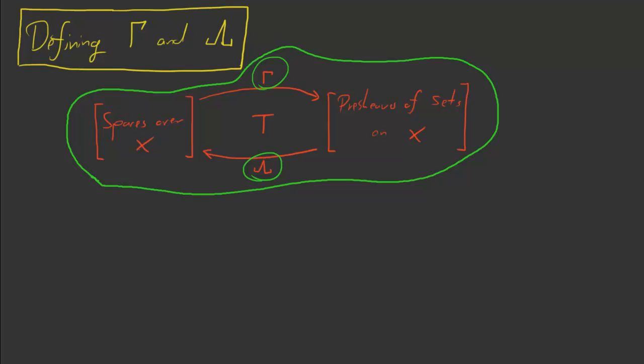So let's start with gamma because it's easier. Alright, well gamma starts with a space over X and it's going to end up giving us a presheaf. As always, a presheaf of sets on X. So that's what gamma should be doing.